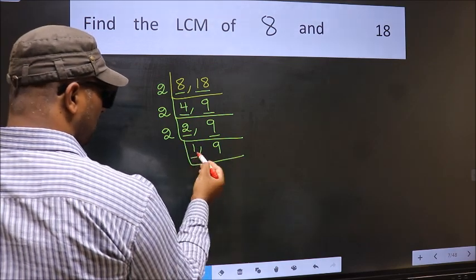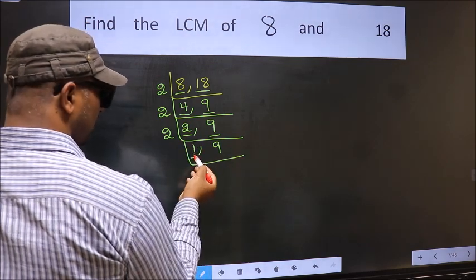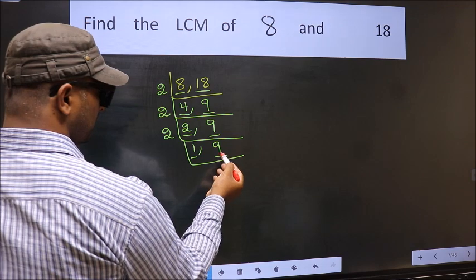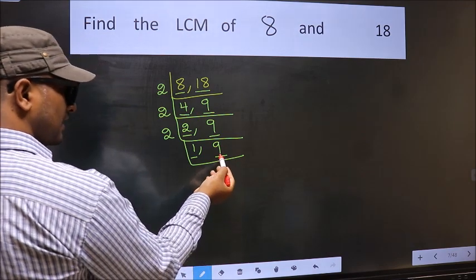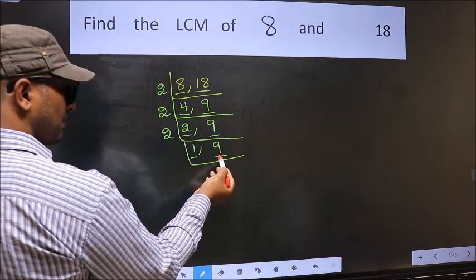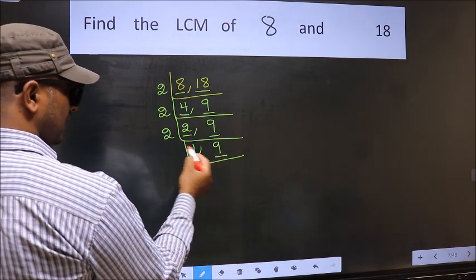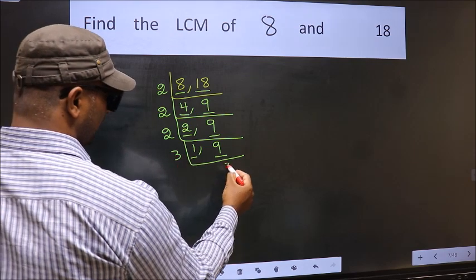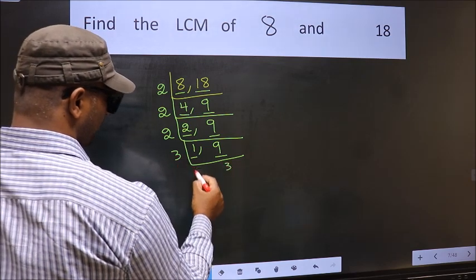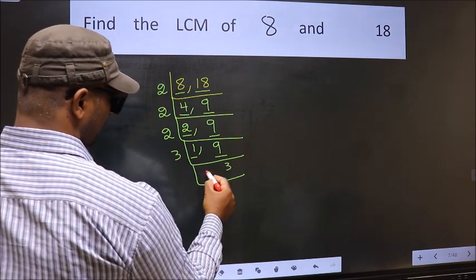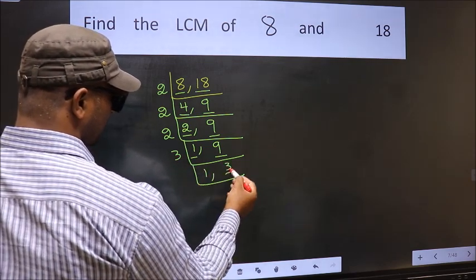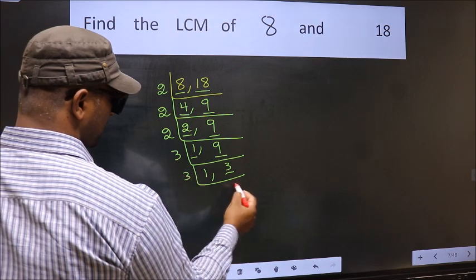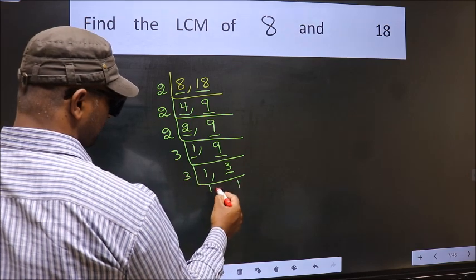We got 1 here, so focus on the other number 9. 9 is not divisible by 2. 9 is 3 threes are 9. Now we have 3 here — 3 is a prime number, so 3 ones are 3.